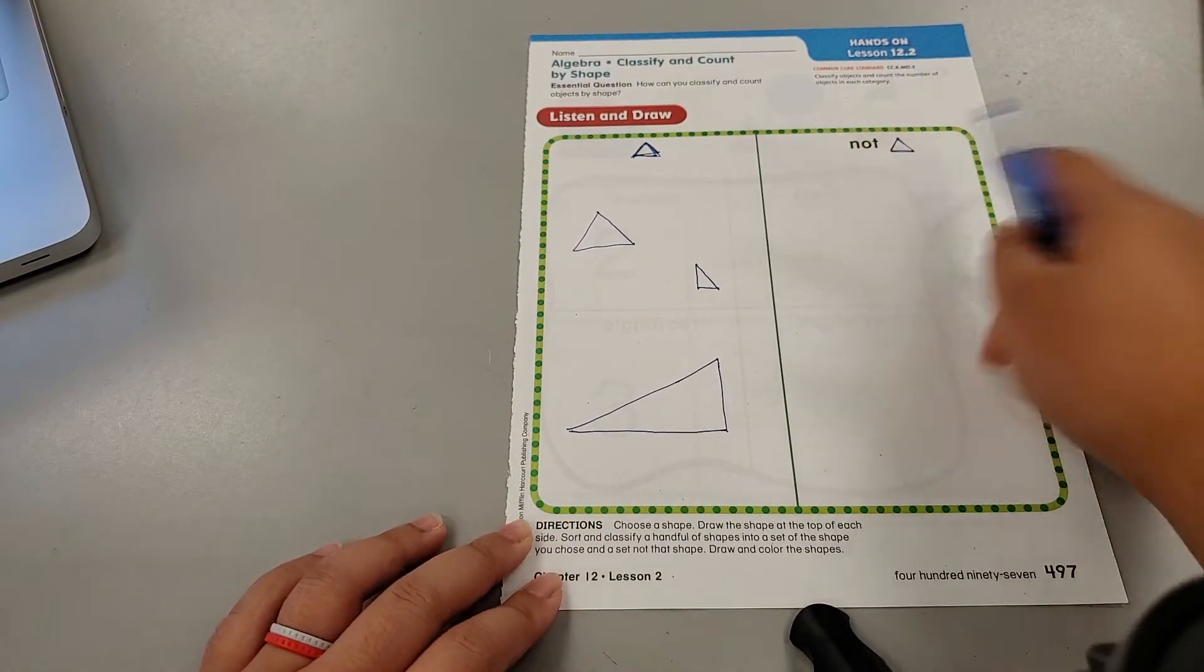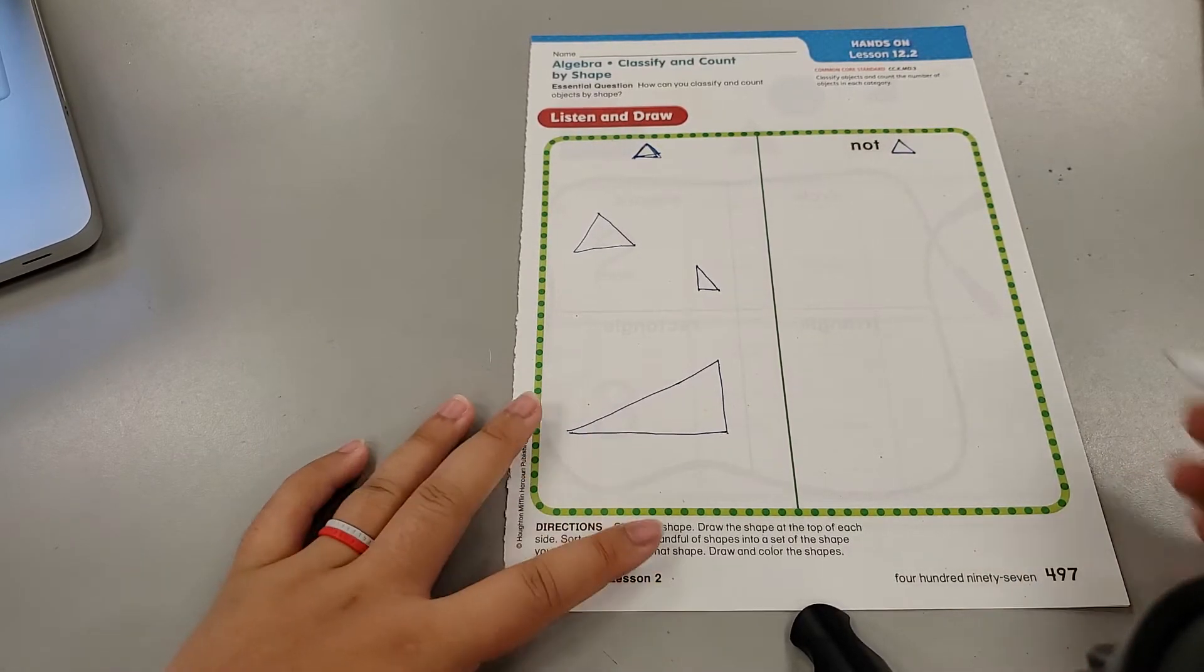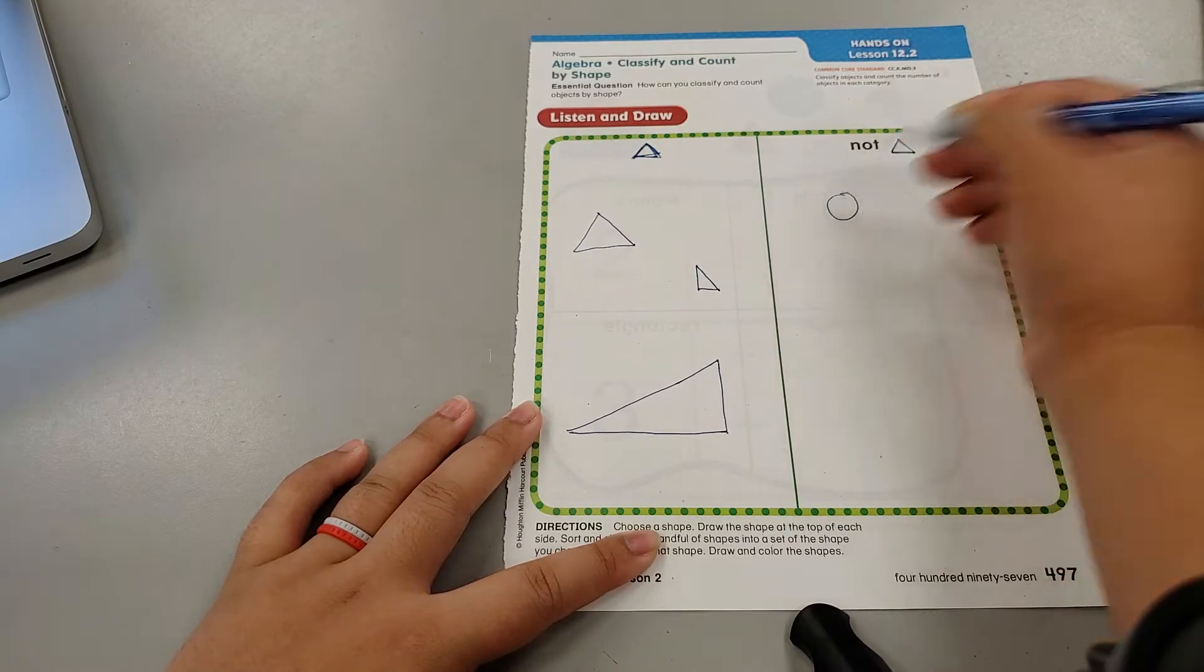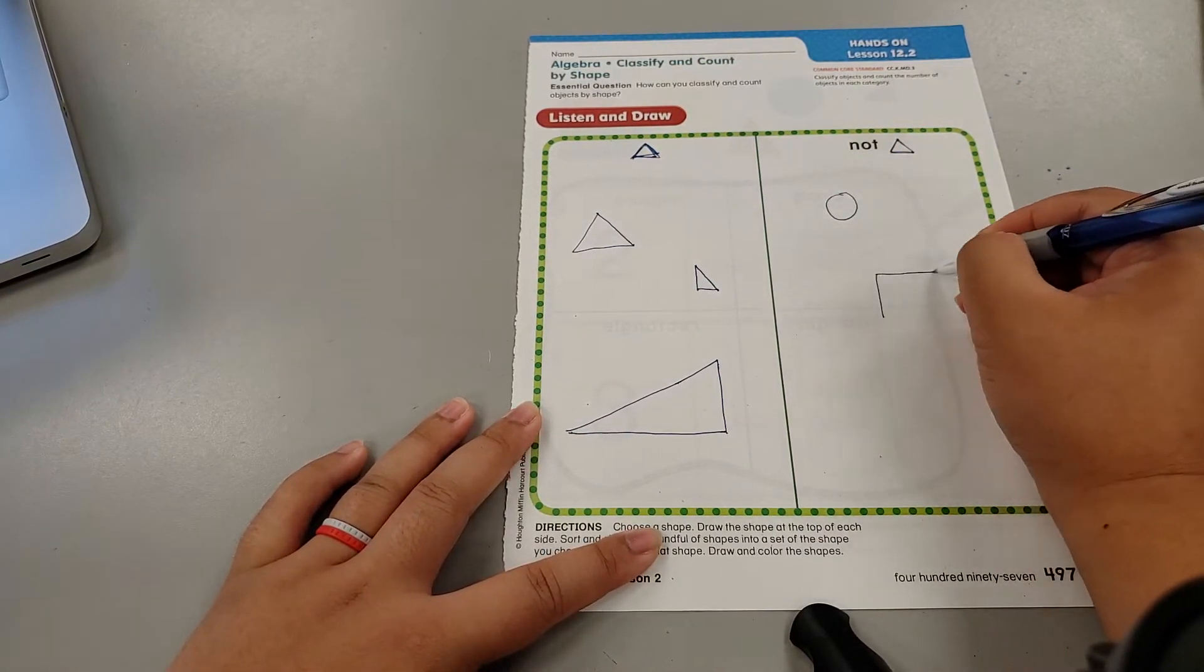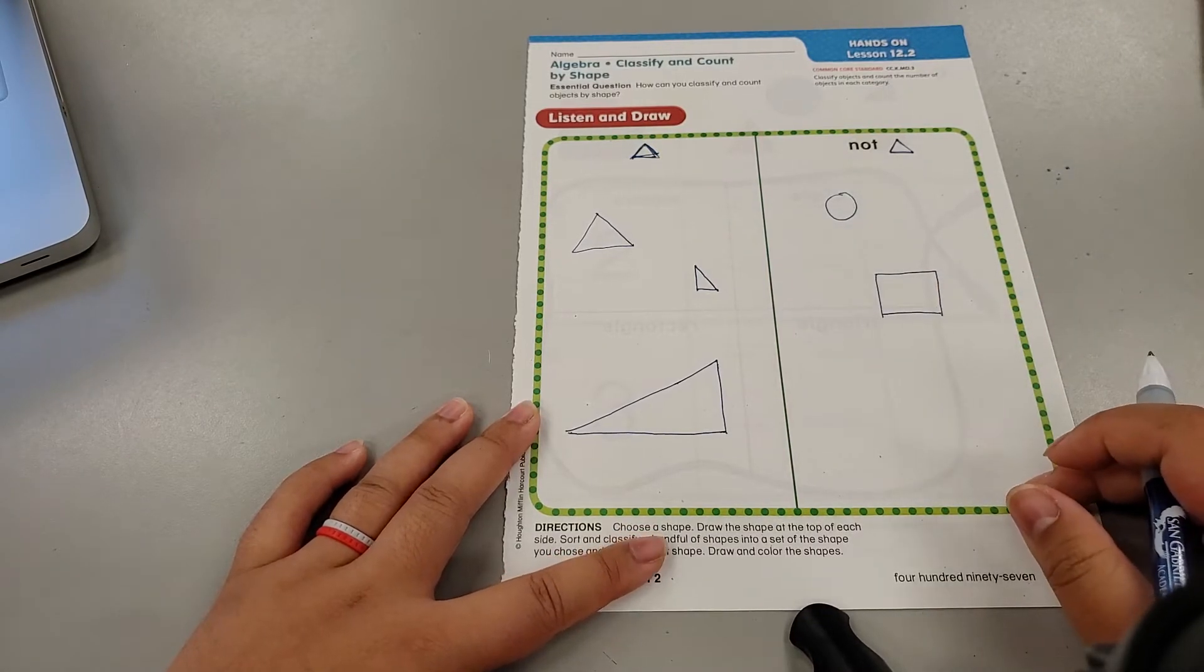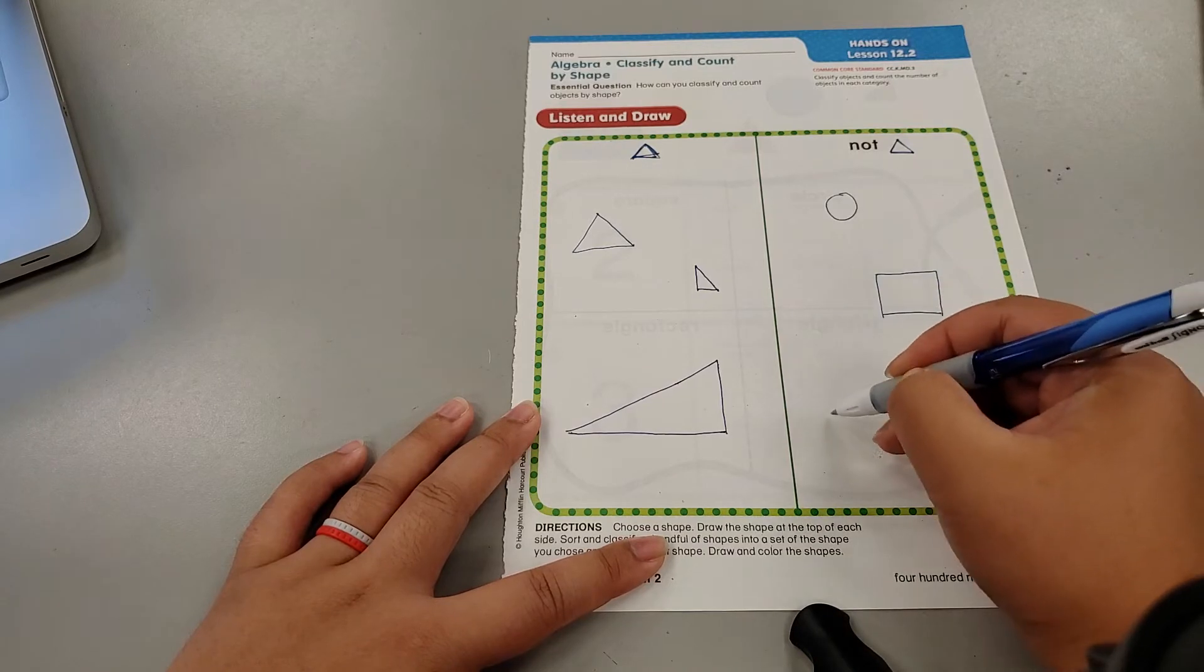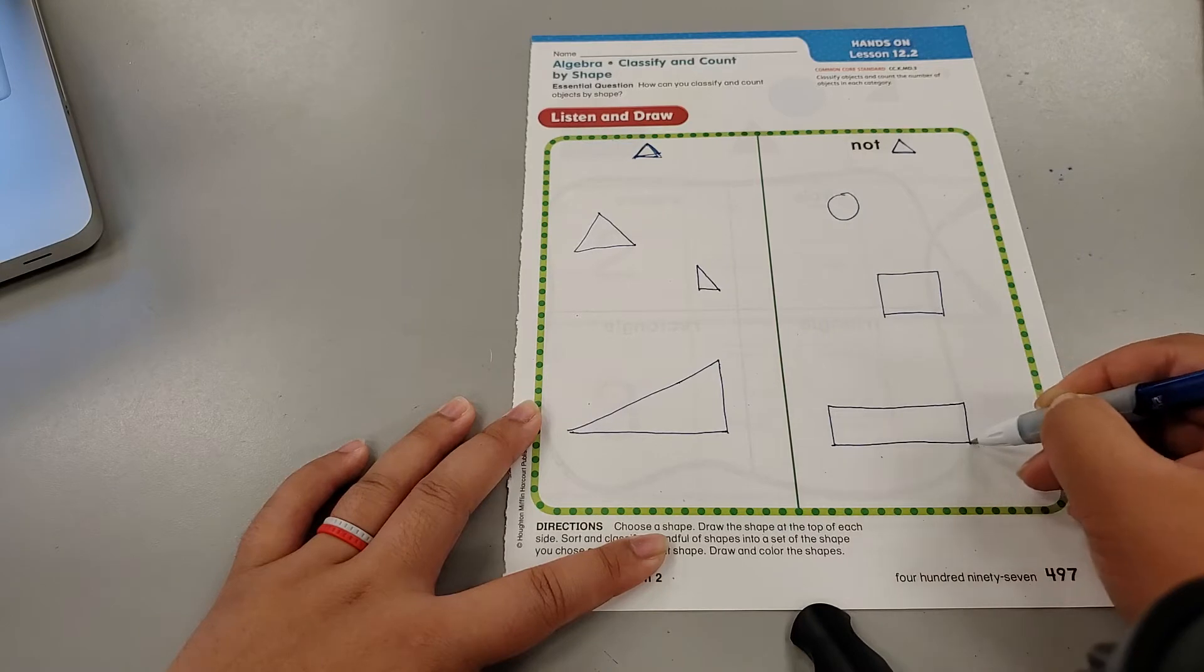Not a triangle. Not a triangle. Hmm. What shapes are not triangles? This one is definitely not a triangle. So I can put it there. This is definitely not a triangle. So I'll include it. And this is definitely not a triangle.